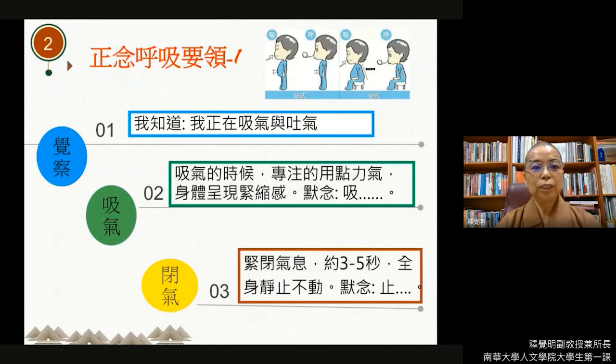正念呼吸的要领，第一，觉察。觉察，我知道我正在吸气，我知道我正在吐气。第二个吸气的要领是什么？吸气的时候，专注的用点力气，身体呈现紧缩感。然后自己心里默念：吸。然后身体紧闭这个气息，吸气进去以后，能够停三到五秒，全身静止不动，然后并且默念：止。